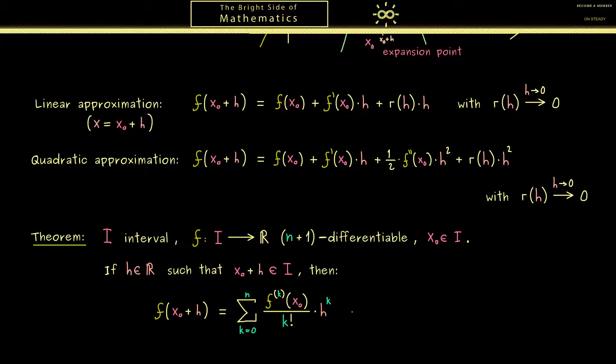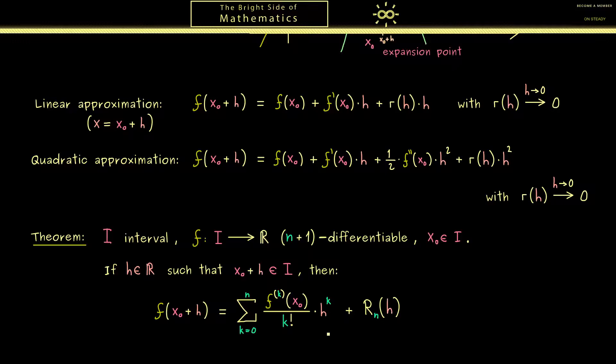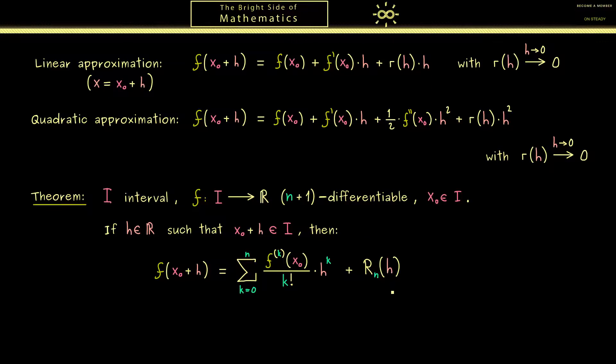And this one I just want to denote with a capital R. And in addition it gets an index n. Of course the whole remainder term also depends on x0. But for us mainly the functional relation to h is important. Therefore you see we often just say Rn for the whole remainder term.